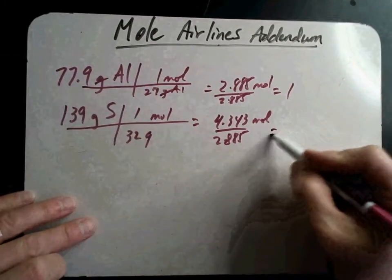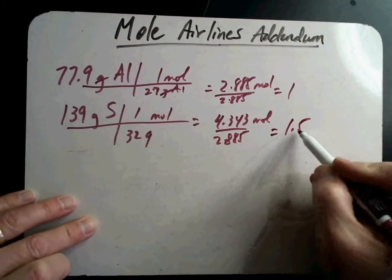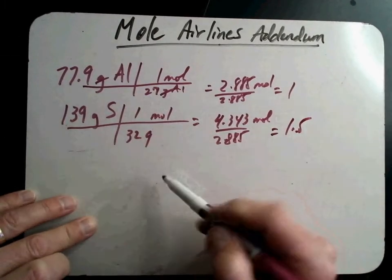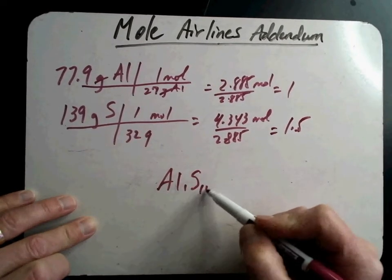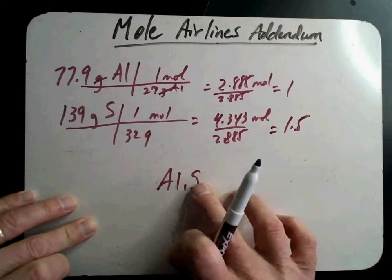Okay, now you saw that in one of the other videos. So the answer is not AL 1 and S to the 1.5. It can't be that. So to solve that, we know that 0.5 is a half.